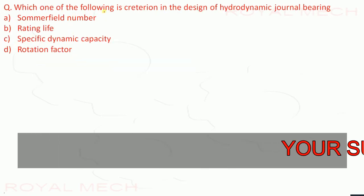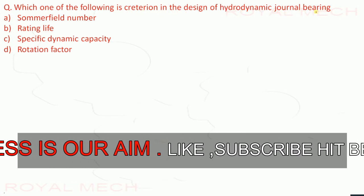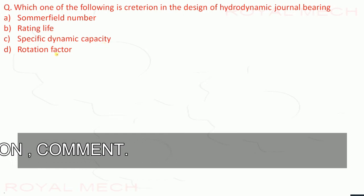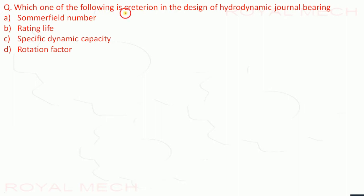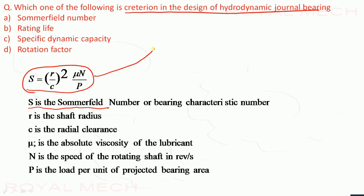Which one is the design criterion for hydrodynamic journal bearing? The Sommerfeld number criterion is S = (R/C)² × (μN/P). Based on this criterion, the hydrodynamic journal bearing is designed. Therefore option A is the correct option.